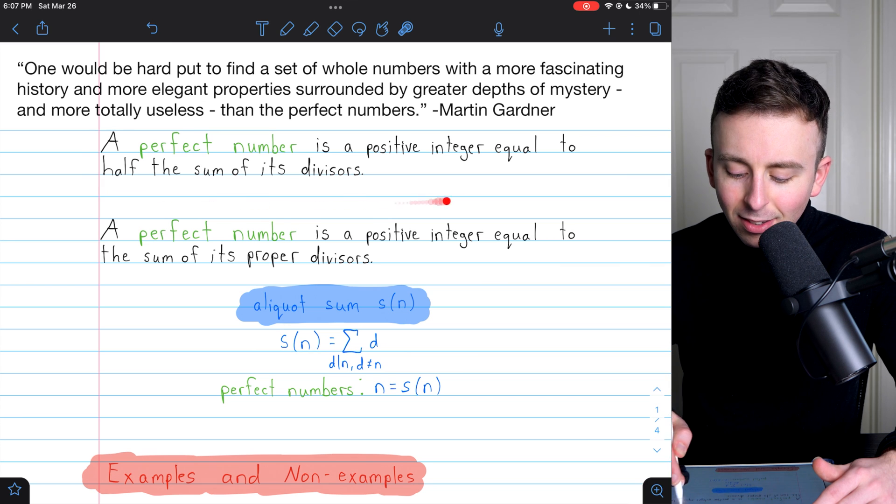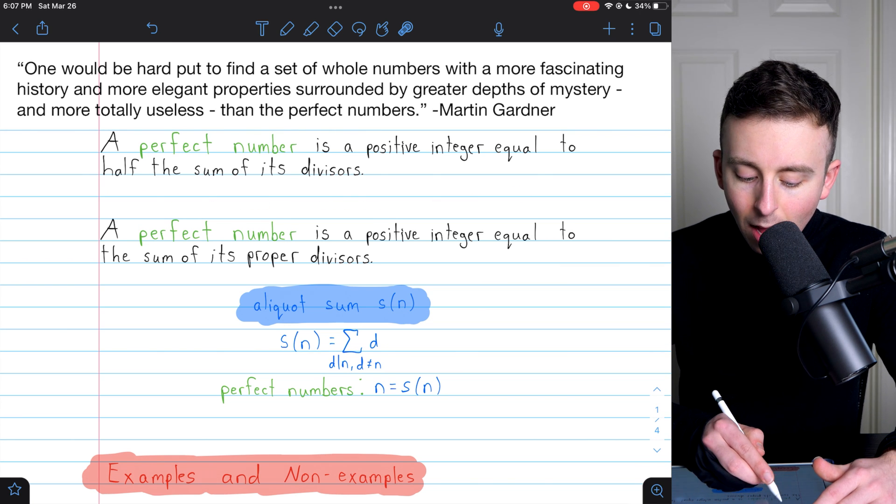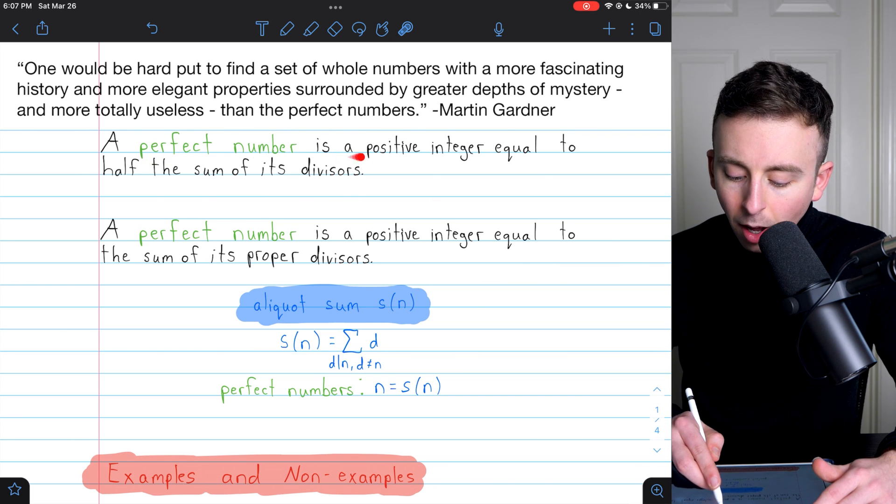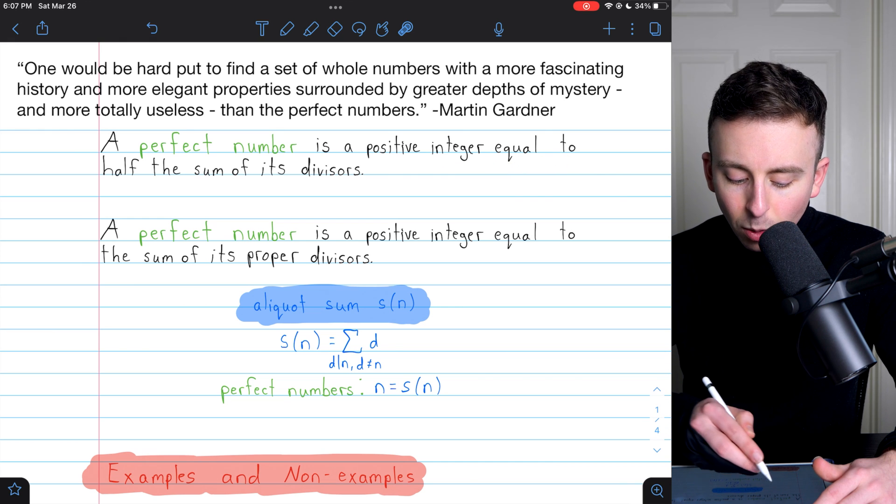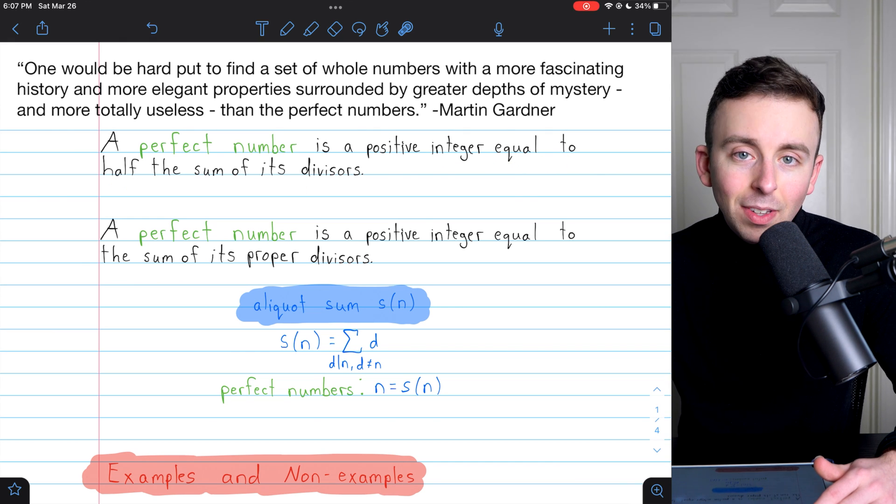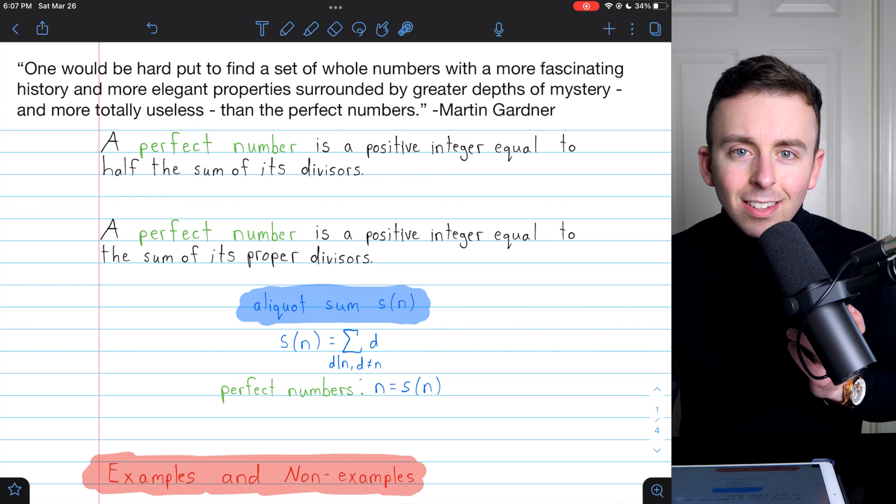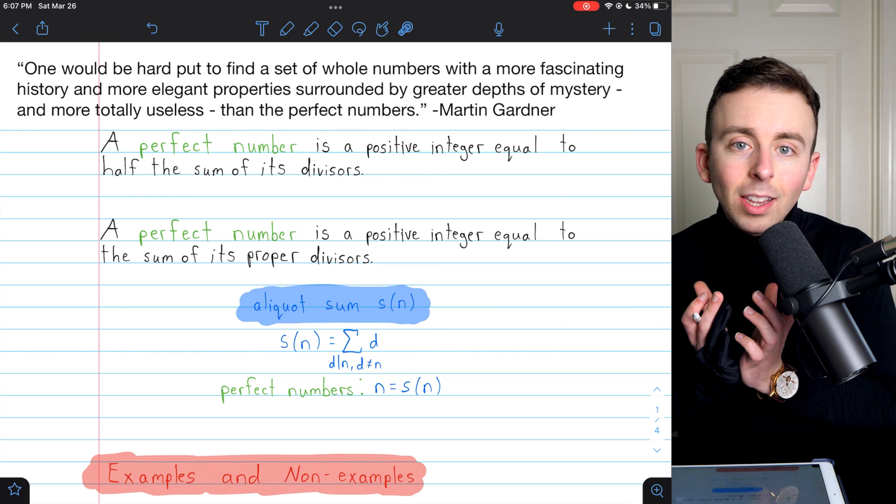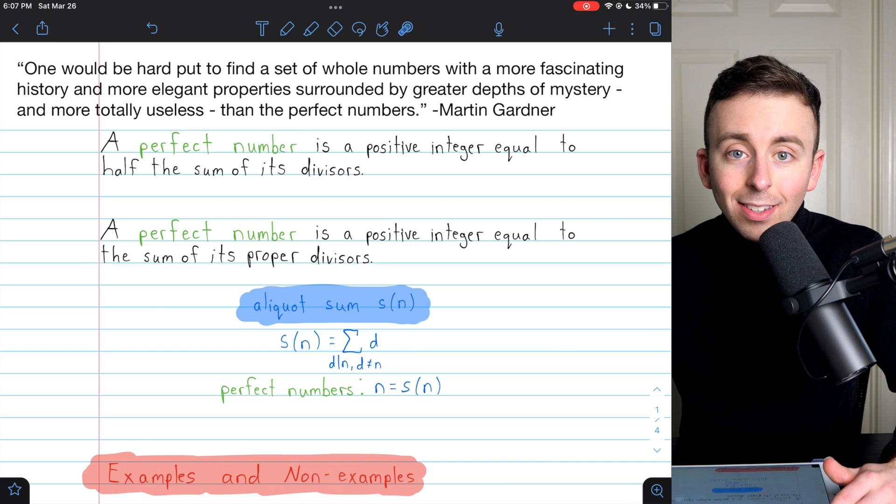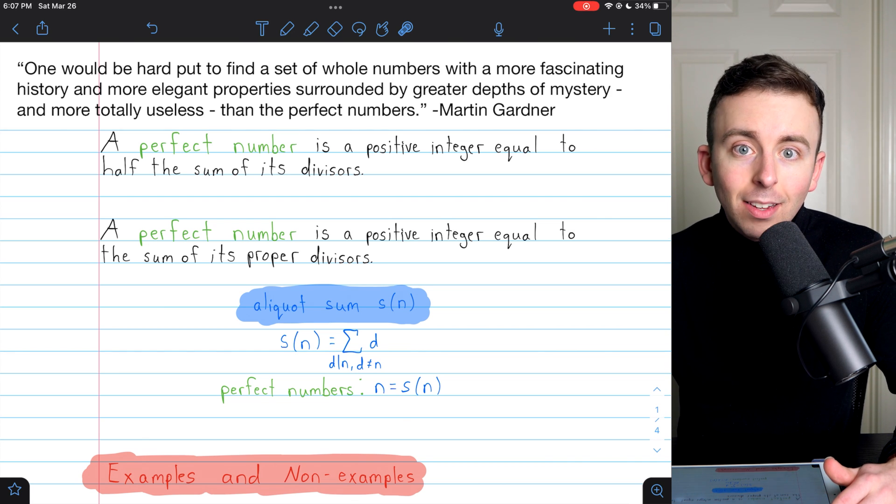So what are the definitions of a perfect number? Here's what I think is the most common one. A perfect number is a positive integer that is equal to half the sum of its divisors. So it's a number that, if we took its divisors and added them all up, we would get twice the number. That's what makes a perfect number.